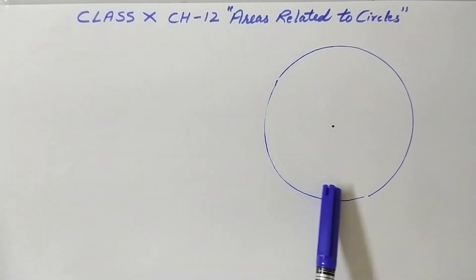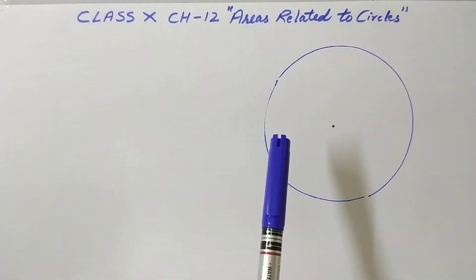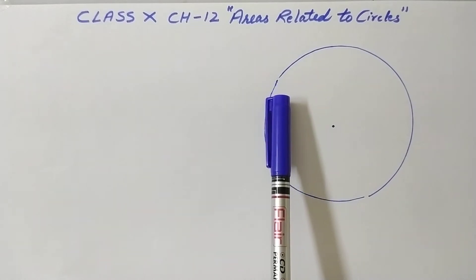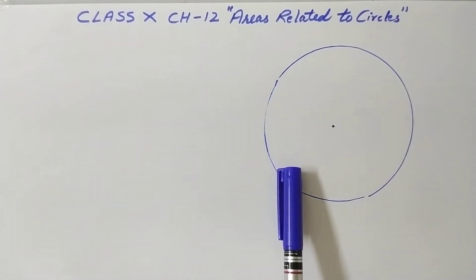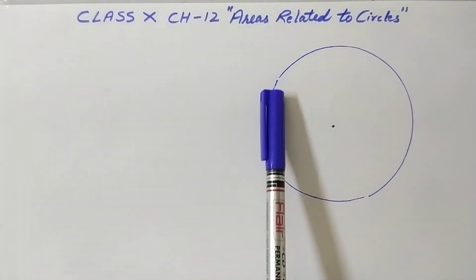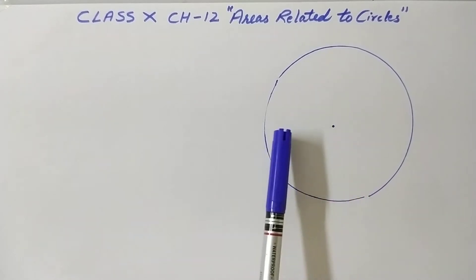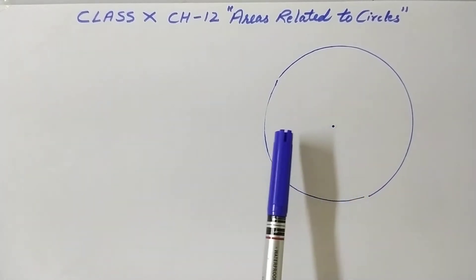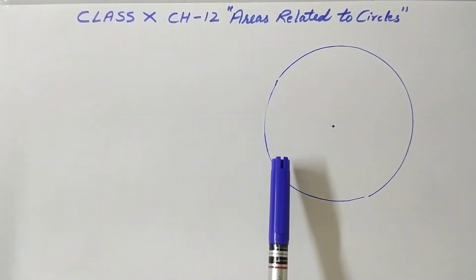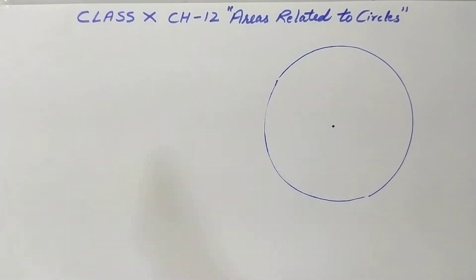So this is a circle. First of all, let's see what a circle is and how we define it. A circle is made up of points, and these points are all at equal distance from the center. So we can define a circle as the collection of points which are at equal distance from the center.